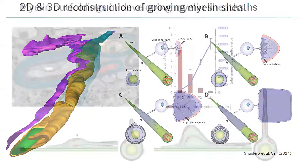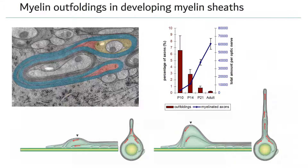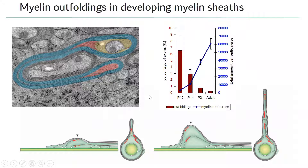One aspect we discovered was an ultra-structural feature of myelin usually associated with pathology: large myelin outfoldings, typically seen in leukodystrophies. But we found them also in development, present at P10 in mice, and decreasing with time. At the time we thought they might serve as membrane reservoirs for the future growth of the myelin sheet.